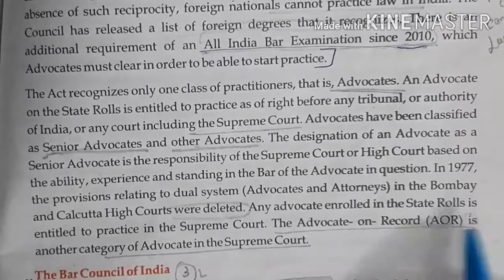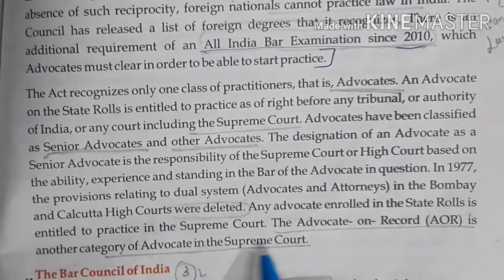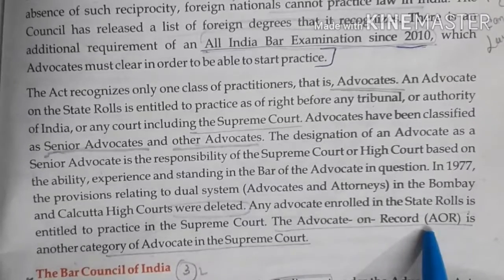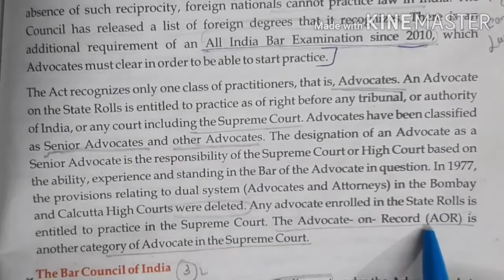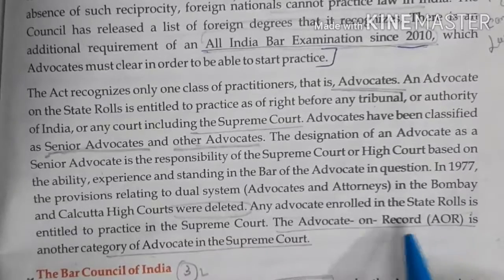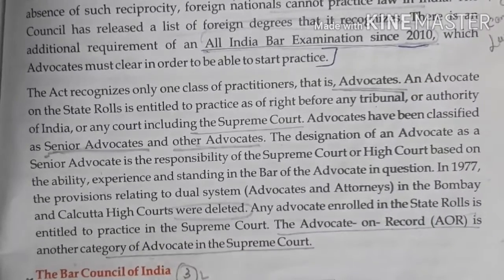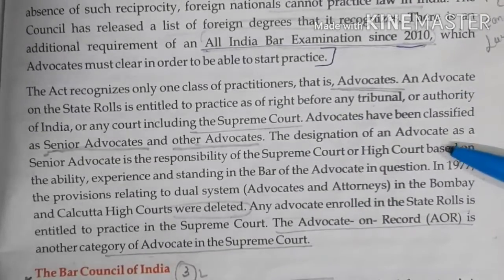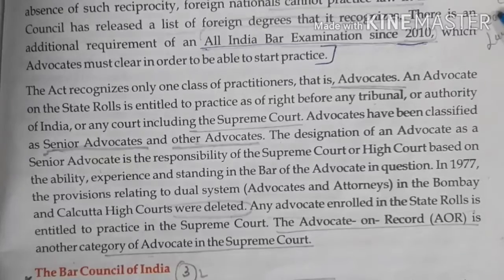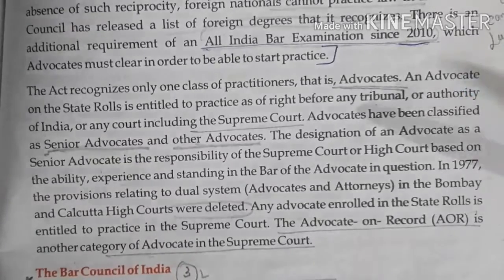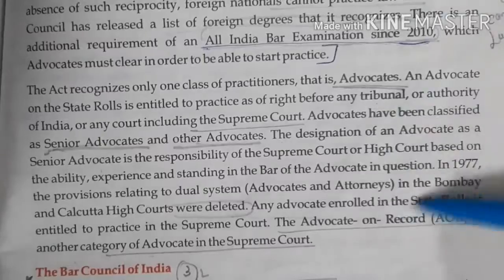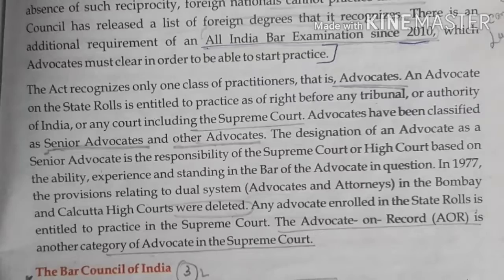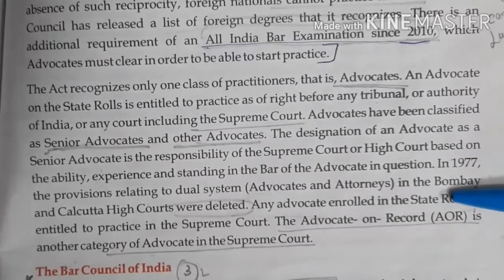Advocate on Record is another category of advocate in the Supreme Court. In the Supreme Court, you can be a Senior Advocate, and there is also the category of Advocate on Record as a distinct category. So these cover the qualifications of an advocate, the functions and composition of the State Bar Council, and the composition of the AIBC — all of which are most important topics.